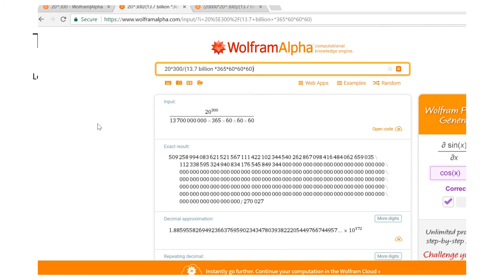Now, let's do some calculations taking into consideration time. The age of the universe is 13.7 billion years. We convert that into seconds. We take that to the days, and then to hours, and then to minutes, and then to seconds.